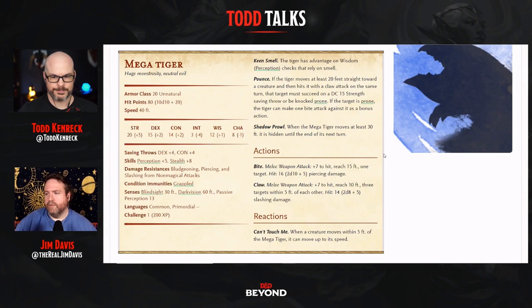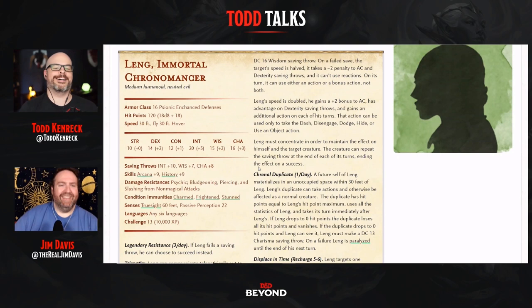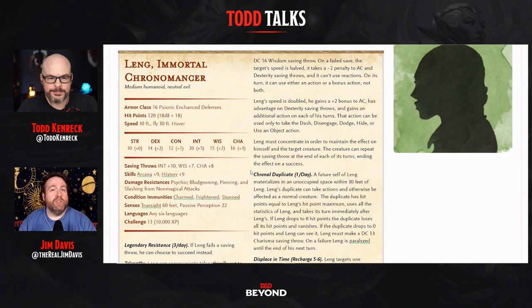Sometimes you want to go all out — not just a reskinned monster, but something with swapped-out abilities created whole cloth. Let me show you one of my bad boys: Lang the Immortal Chronomancer. Lang was meant to challenge a party of about five fifth- or sixth-level characters and is designed to be a solo monster. A lot of Lang's abilities either give him a leg up when he's the only one around or are meant to surprise the party.